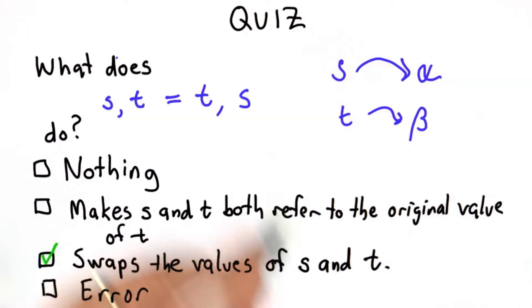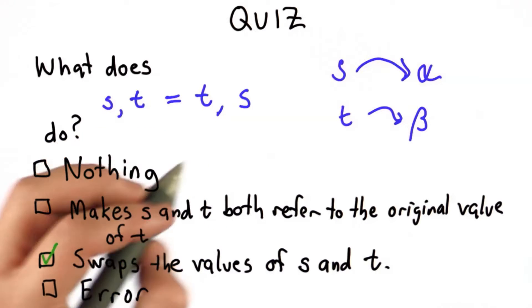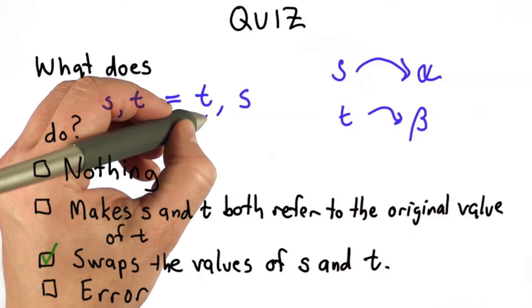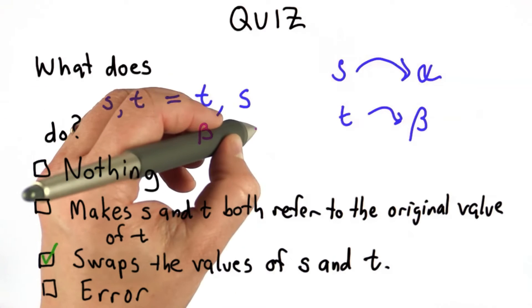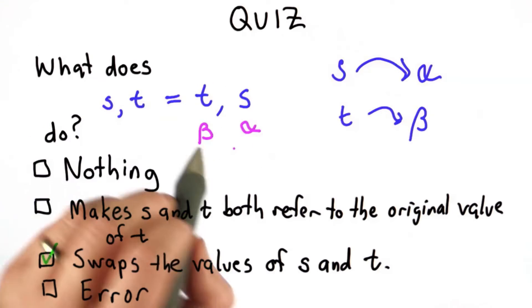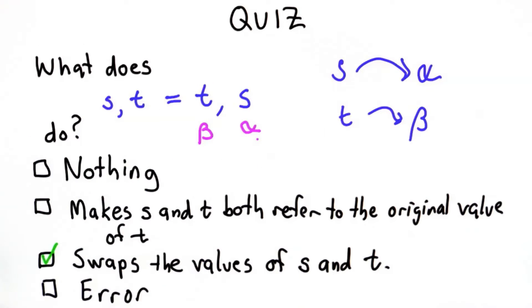To evaluate the multiple assignment expression, we find the value of T here. That has the value of beta. And we find the value of S, and S has the value of alpha. So we've evaluated both of these, and we've turned them into the values the names refer to.